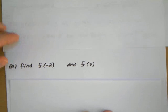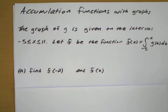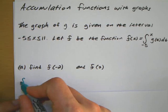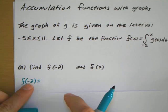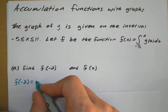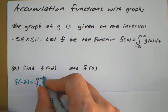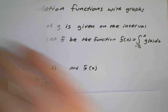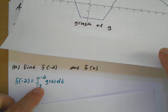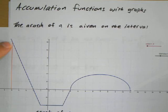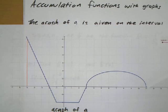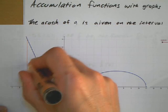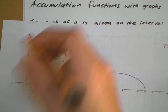So for part A, it's saying to find the value of f of negative 2. Since this is an accumulation function, f of negative 2 is just really saying plug in negative 2 as your upper limit. So I'm just going to be looking for this area.